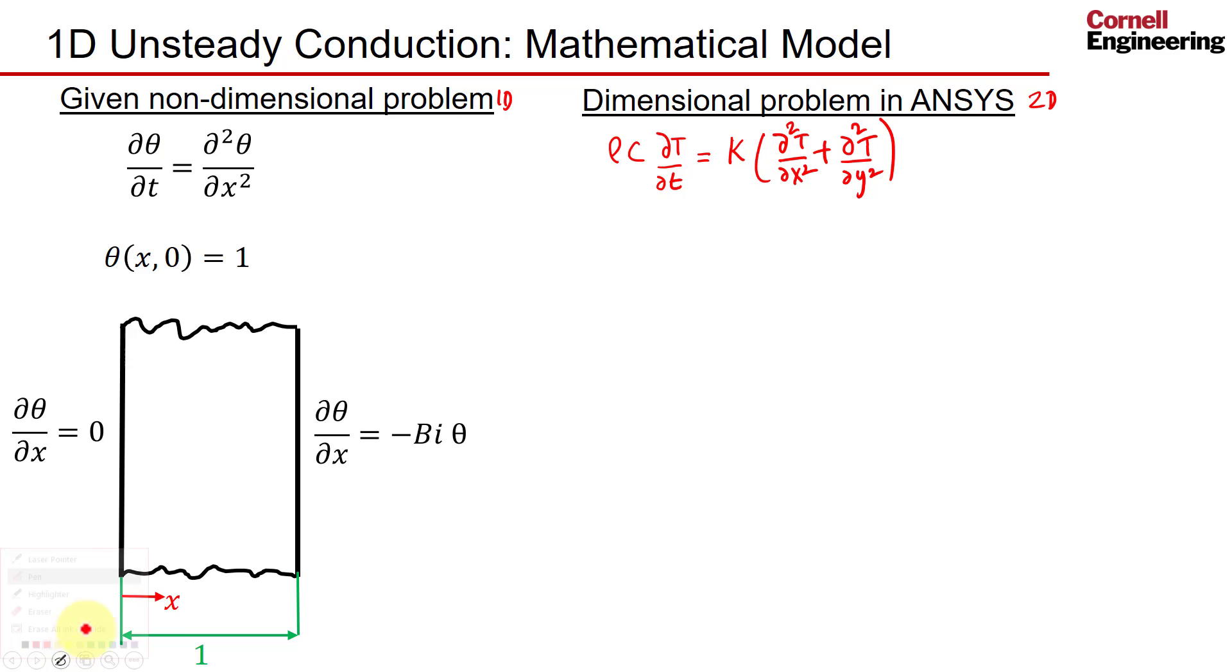To make the governing equation look like the non-dimensional form, we choose the constants in the governing equation to be 1 in SI units. So rho, the density, we'll set to 1 kg/m³. The specific heat C we'll set to 1, and K is also equal to 1 in SI units. If I set these material properties to 1, this equation looks like the non-dimensional version, except for this extra term.